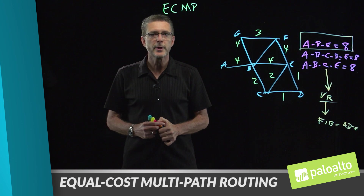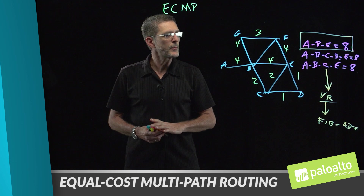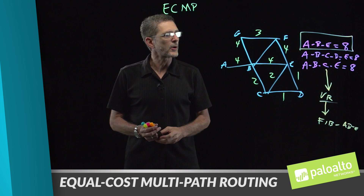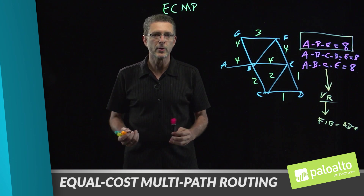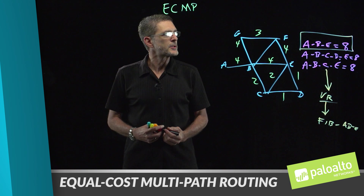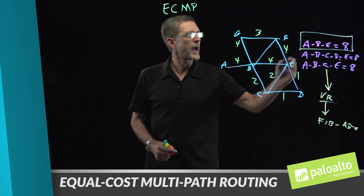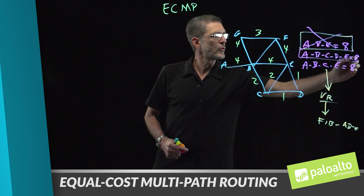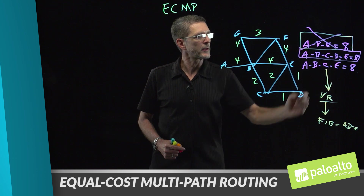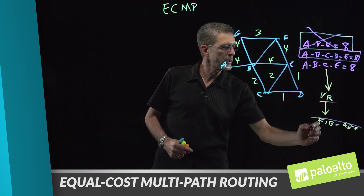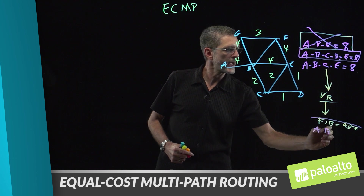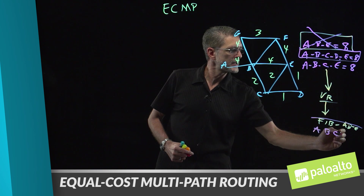Without multipath routing enabled, the other two links are unused unless there is some type of failover. If there is an outage between A to B to E, then a new route becomes the active route. We update our routing table with A to B, B to C, C to D, and D to E.